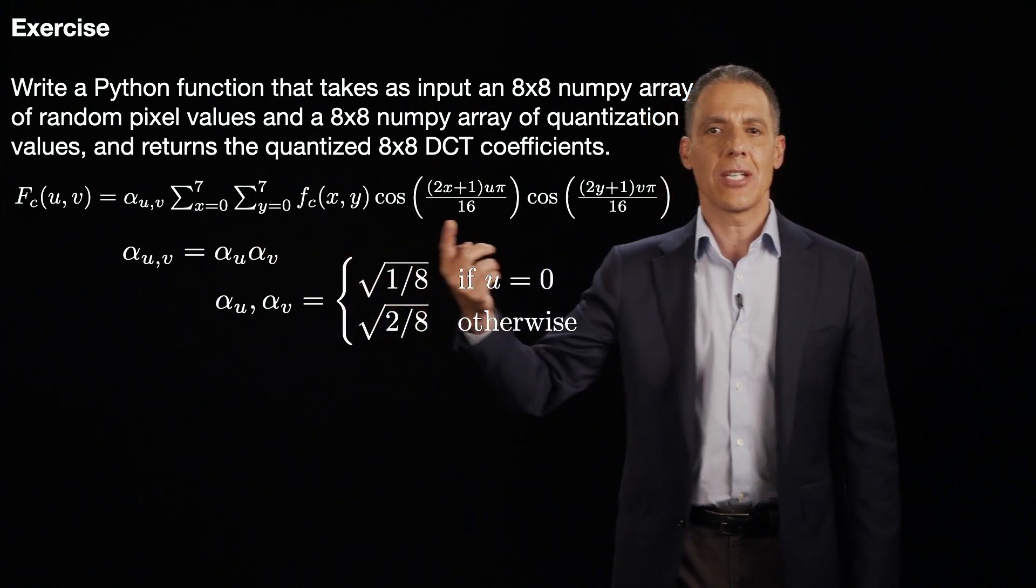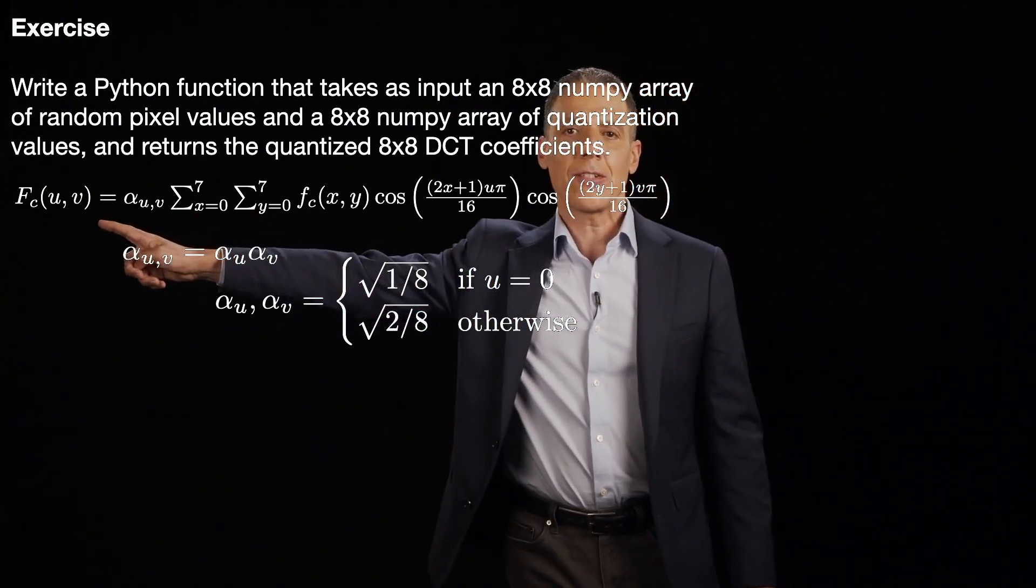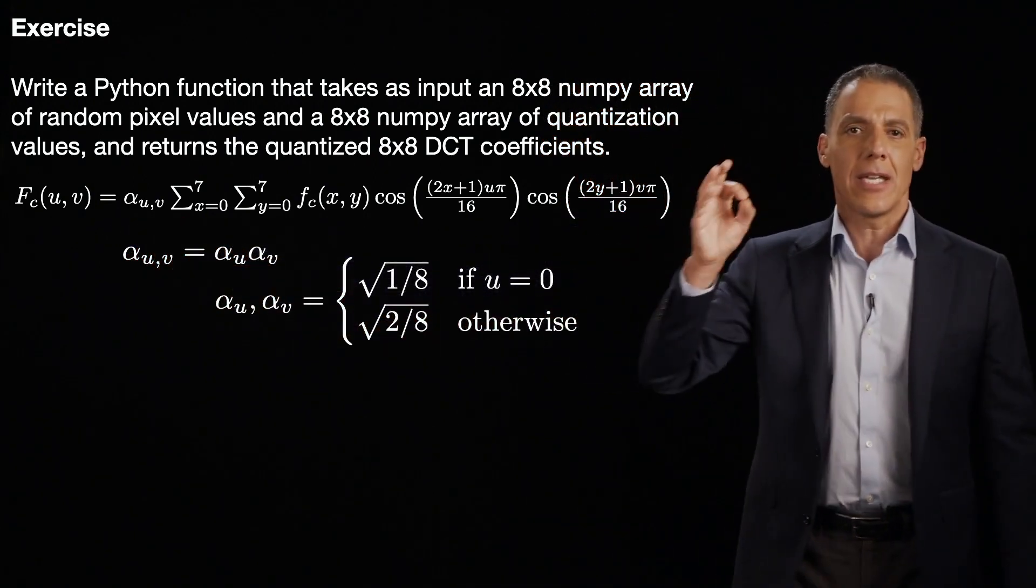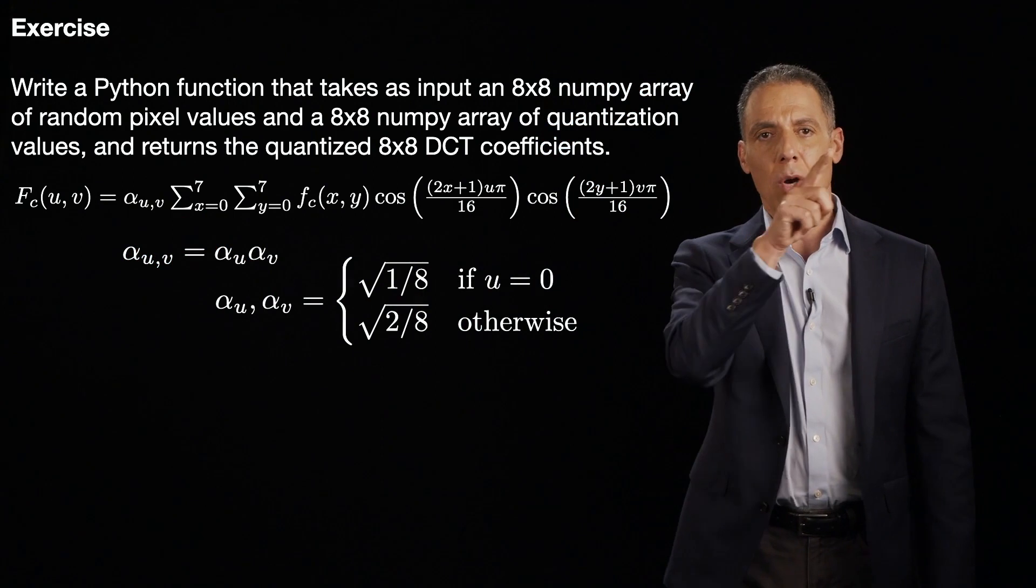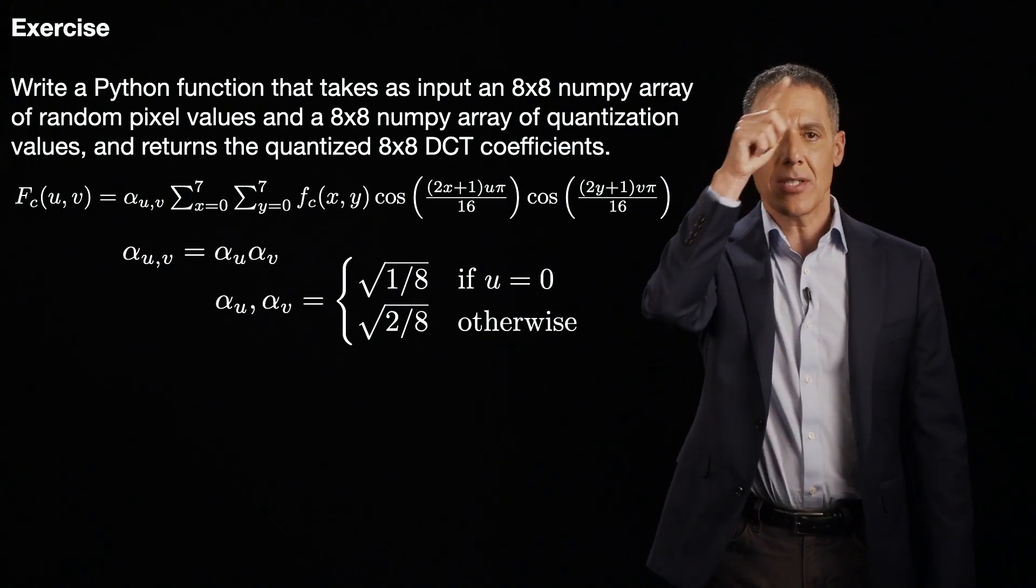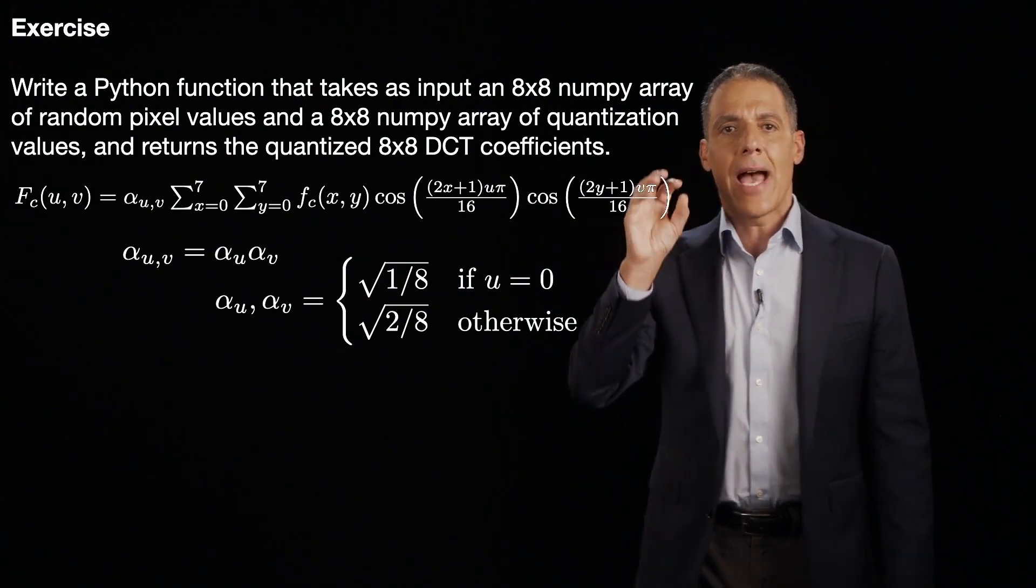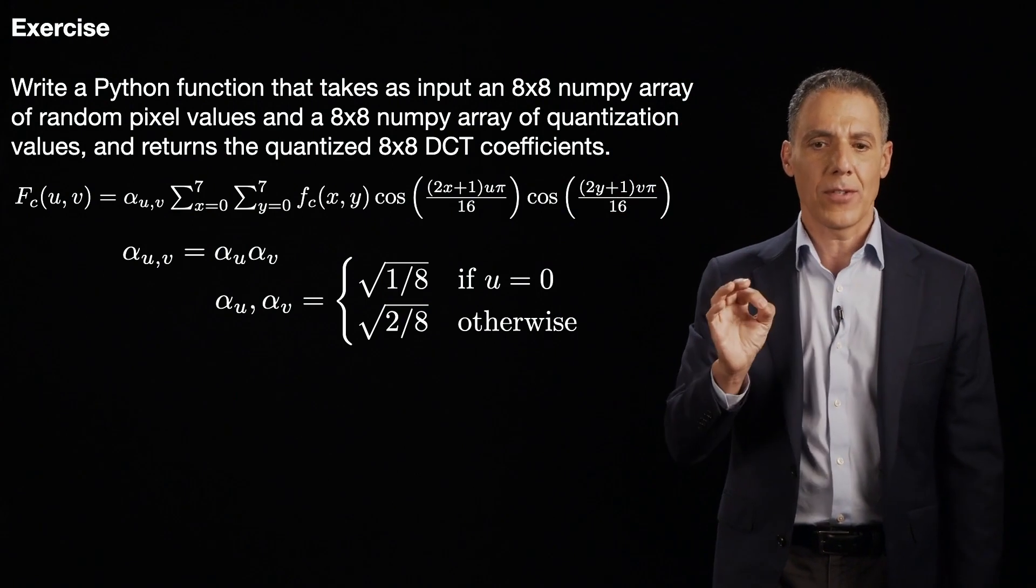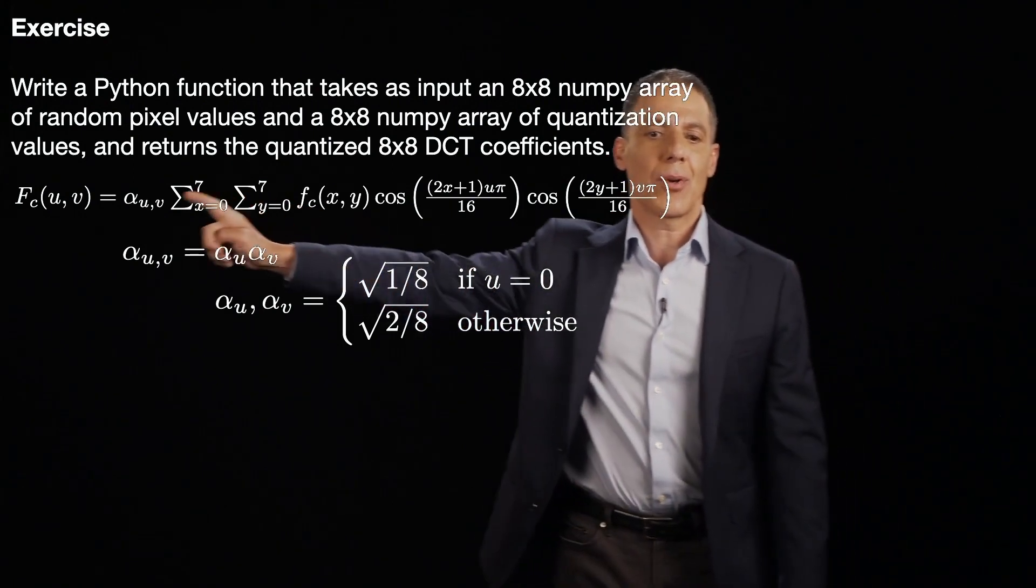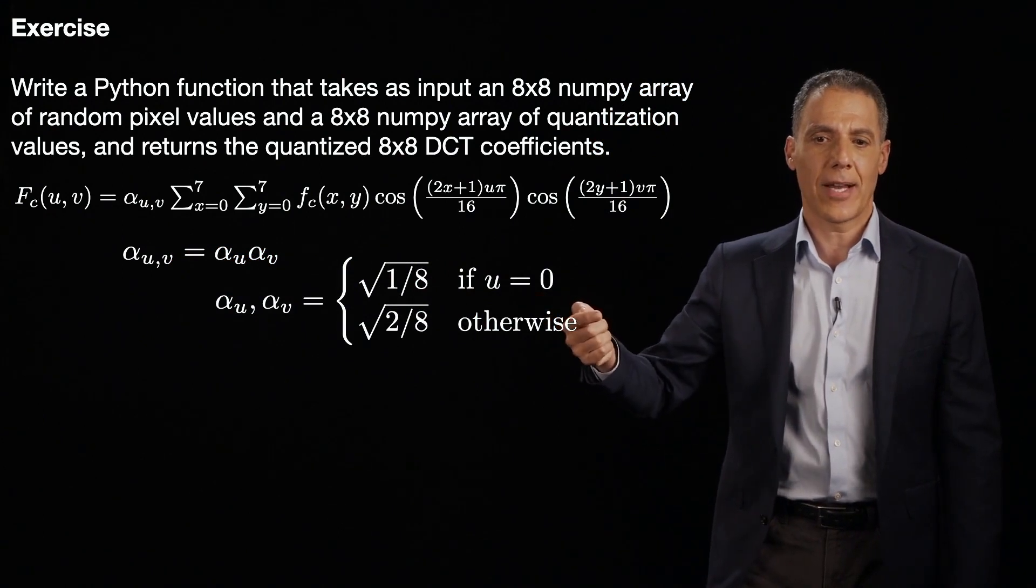So first of all, all the way over here, F_c(u,v) is the DCT transform. So u, v will go from 0 to 7, 0 to 7 for that little 8x8 block. That's what u and v are. Now for the u, v, DCT coefficient, it is equal to the product of this alpha u, v. We'll talk about what that is in a second. I defined it right here. Times the double sum over all pixel values.